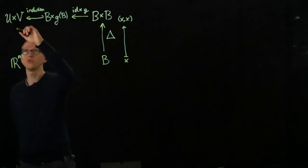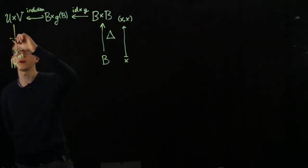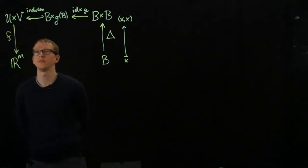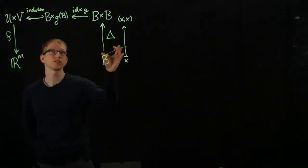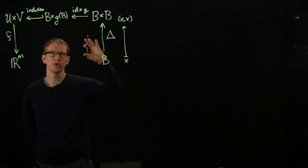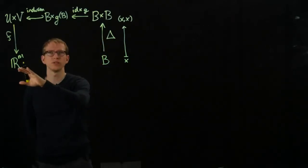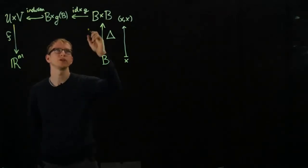And then on U cross V, we have the function F from U cross V to Rm. And let's just check to make sure where all of these elements go, to be clear that this really is describing F applied to the graph of the function.